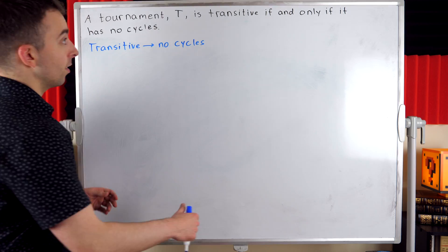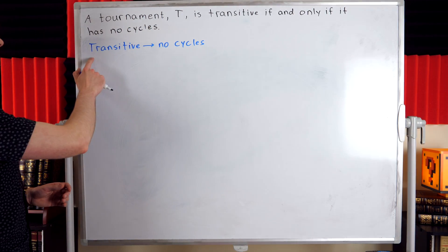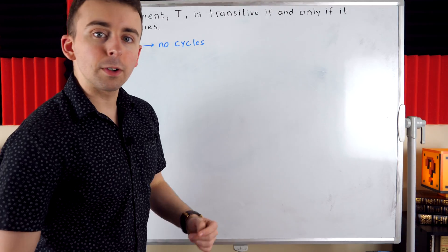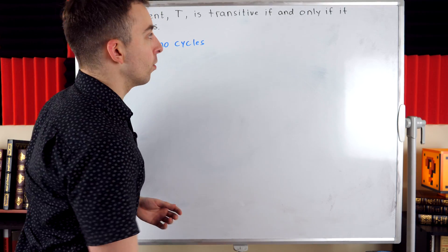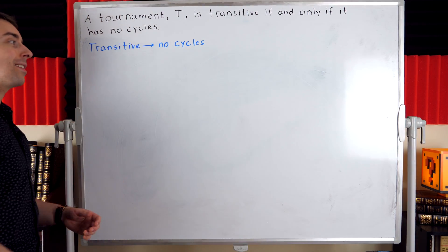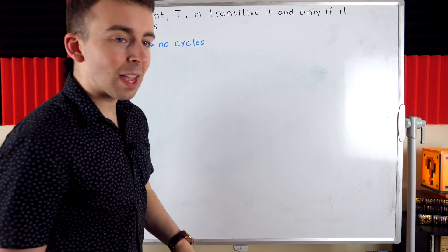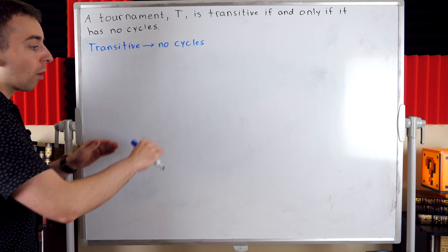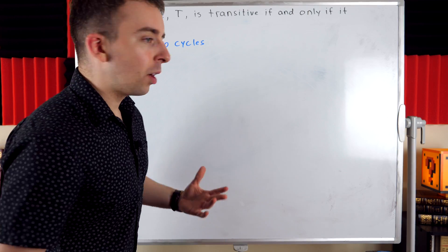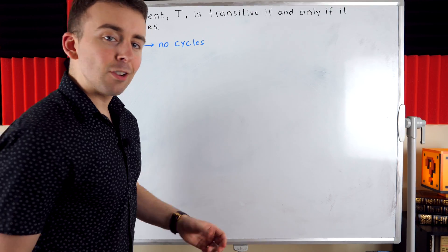The first direction — since this is a biconditional statement — is that if a tournament is transitive, then it has no cycles. This is the more difficult direction. The other direction, to prove that no cycles implies the tournament is transitive, is super easy, but this one is not too bad either. Before we get into the formality of the proof, let me just give you some intuition. Why should cycles cause a problem in a transitive graph?